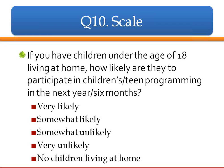Likelihood question for parents: 'If you have children under the age of 18 living at home, how likely are they to participate in children's or teen programming in the next year?' Use this as a filter — ask 'do you have children living at home?' If yes, ask this question; if no, skip ahead. Give them the likelihood scale and an opt-out at the end for those without children at home. Another way to ask it: 'Do you have children under the age of 18 living at home?' Yes or no. If yes, continue; if no, skip to a later question, because the next several questions are about children at home.